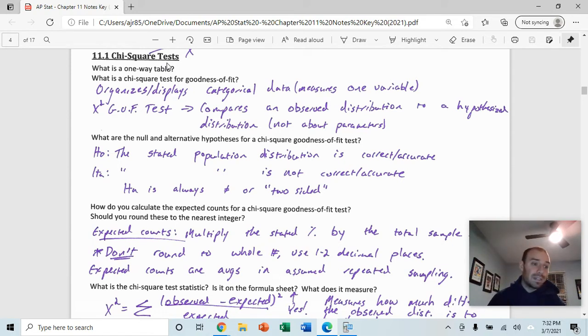Another potential example could be something like looking at eye colors in a population and measuring that one variable eye color and looking at the percentages that would fall into each of the different eye colors. So a chi-squared goodness of fit test compares an observed distribution to a hypothesized distribution.